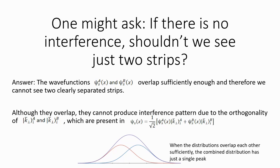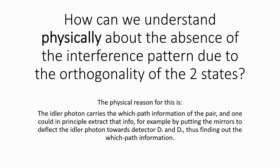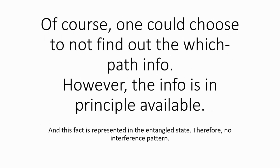How can we understand physically the absence of interference pattern due to the orthogonality of the two terms KIA and KIB? One can understand it like this, the idler photon carries the which path information of the pair, and one could in principle extract this information by doing some measurement on the idler photon, for example by directing it to be detected by D3 or D4. This availability of the which path information acts like a label to the states of the signal photon, making it unable produce the interference pattern.